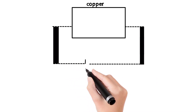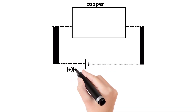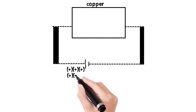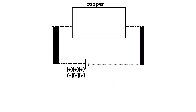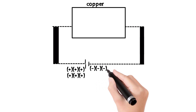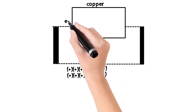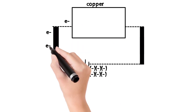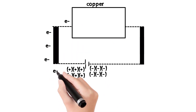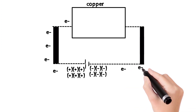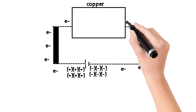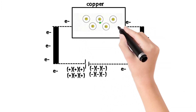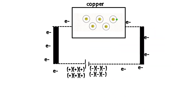The copper conductor has a positive terminal and a negative terminal. In the positive terminal, a set of positive charges are placed; in the negative terminal, a set of negative charges are placed. The positive terminal attracts free electrons in the copper conductor, while the negative terminal repels them, so free electrons flow toward the positive terminal.